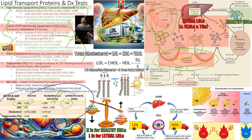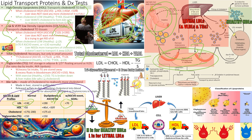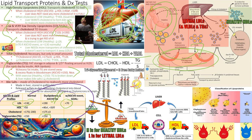Total cholesterol is the sum of LDL + HDL + one-fifth of triglycerides. Total cholesterol above 175 three times in a row indicates dyslipidemia — the first step toward ASCVD complications. Triglycerides don't require LDL for transport; insulin deposits them into adipose tissue. Triglycerides above 150 are too high. Excess triglycerides stored in adipose produce inflammatory adipokines that damage vessels.